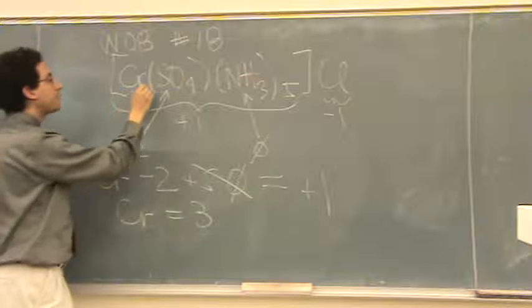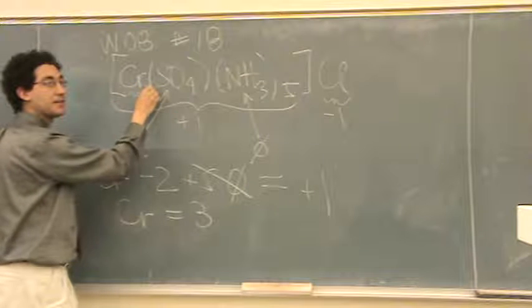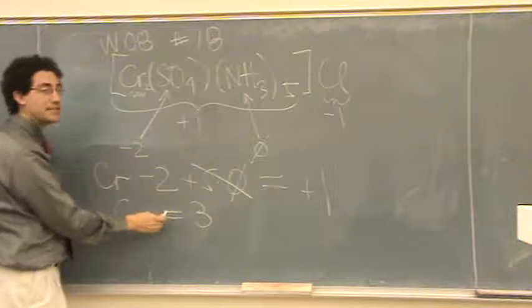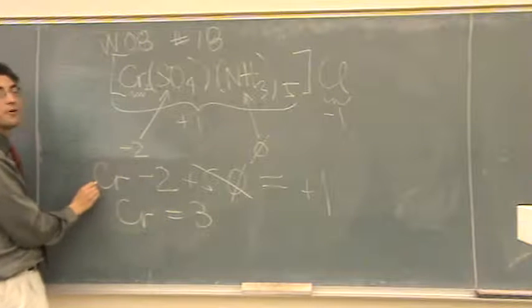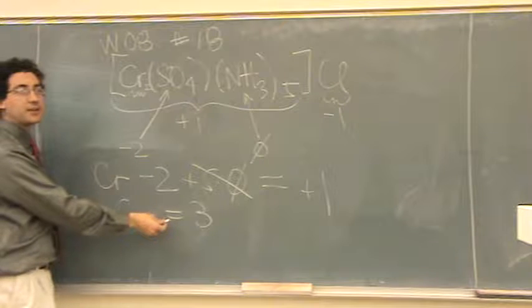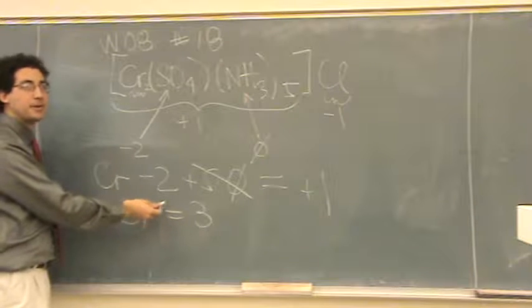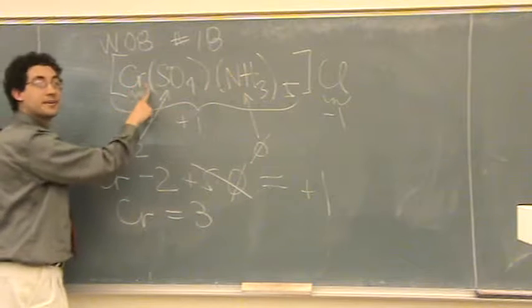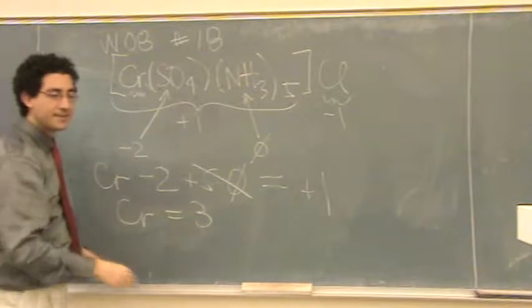Uh-huh. Okay. If the chromium had a 2 here, then you'd have to divide by 2. It'd be 2 chromiums, but that unfortunately would give us a fractional charge, which we're not too happy about. But yes, if it was 2, you'd have to divide by 2. Is that okay? Yeah. Okay, thank you. No problem.